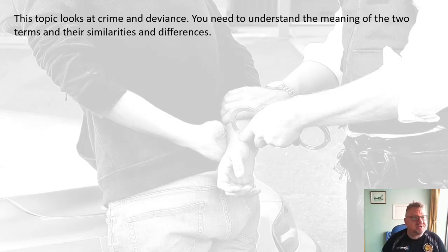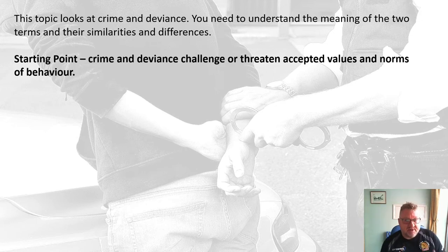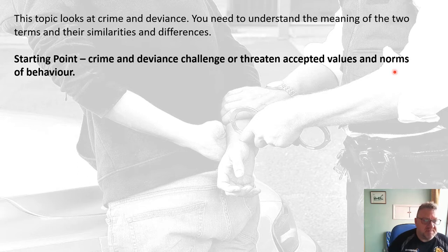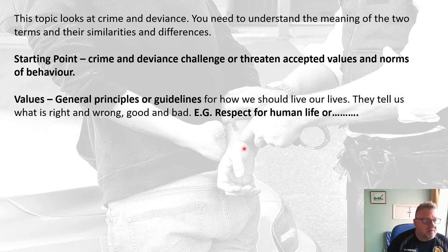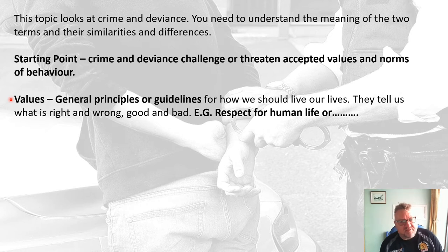This topic requires you to look at crime and deviance and understand the two terms, their similarities, differences, etc. Crime and deviance challenge or threaten accepted values and norms of behaviour. Our values are our general principles or guidelines of how we live our lives — how we define what's right or wrong, what's good and bad. So things like respect for human life would be what we call a value.